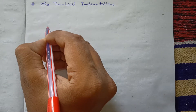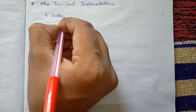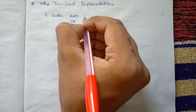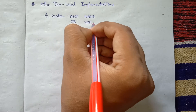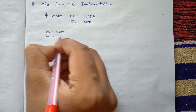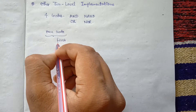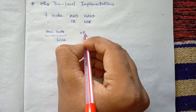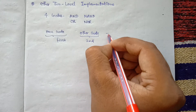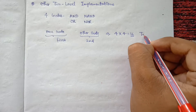In this video we will study two-level implementations. We have four types of gates: AND gate, OR gate, NAND gate, and NOR gate. If we put one type of gate in the first level and another type in the second level, the total combinations we get is 4 into 4, that is 16 possible two-level implementations.